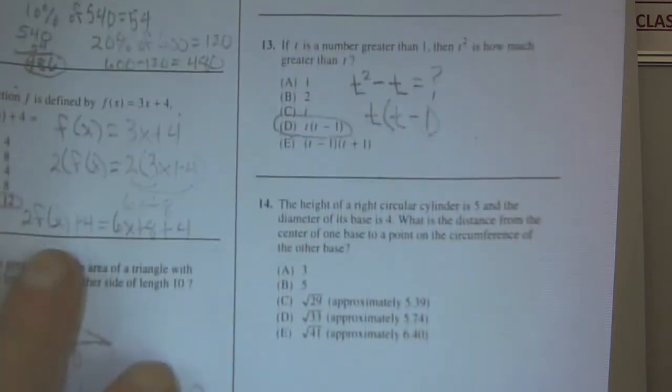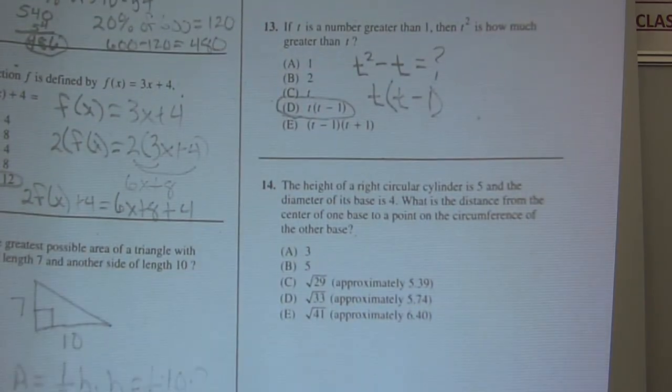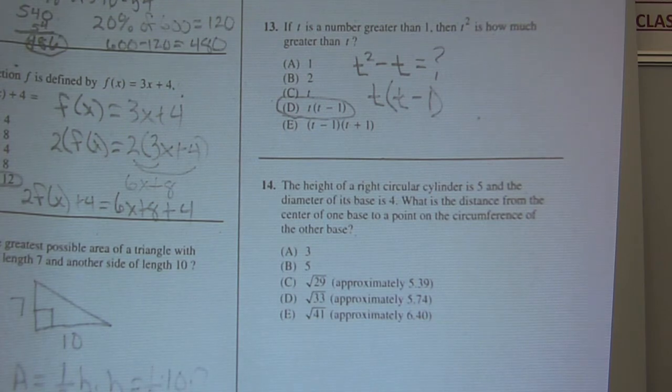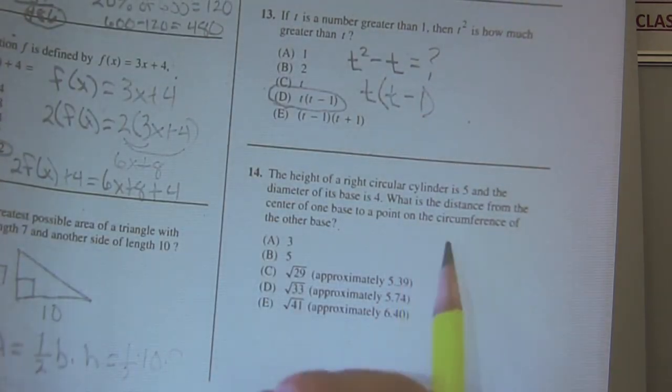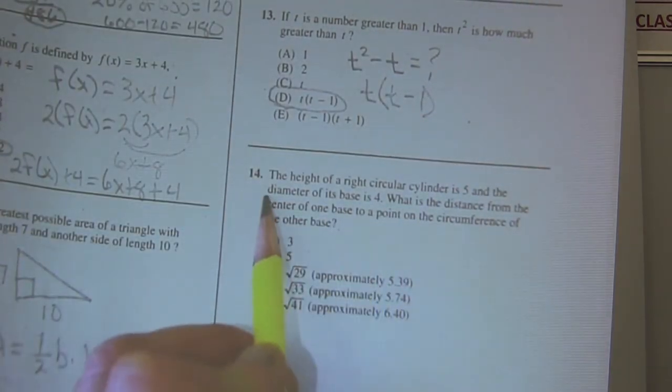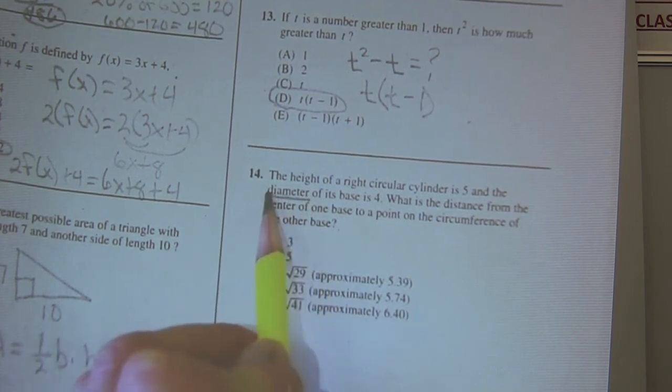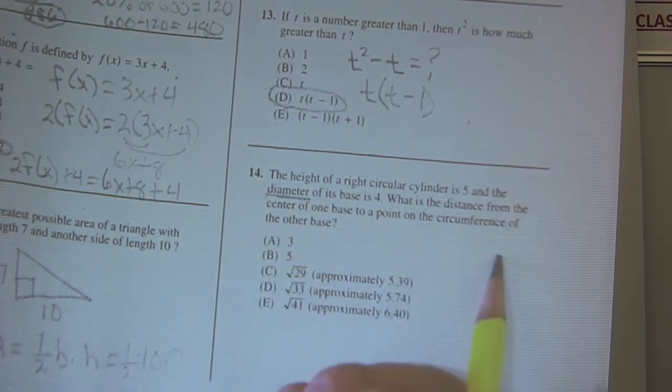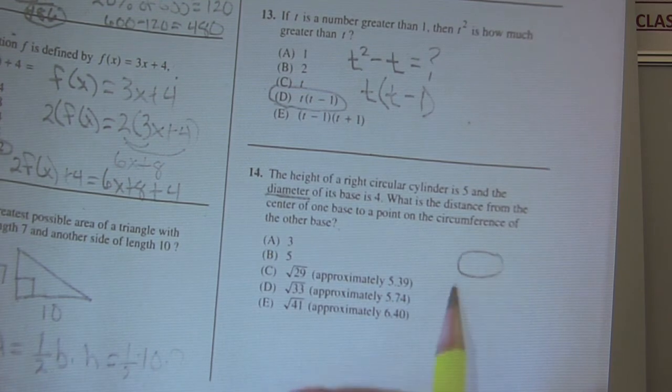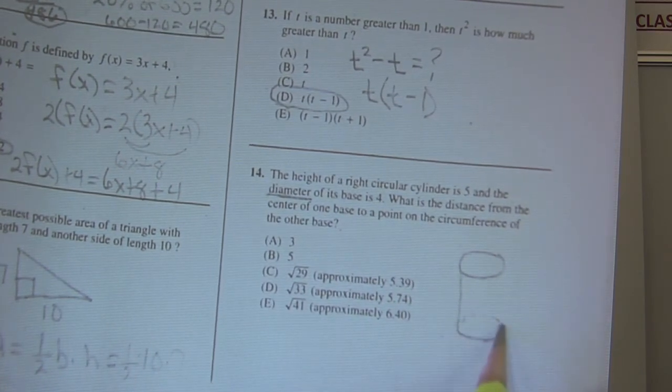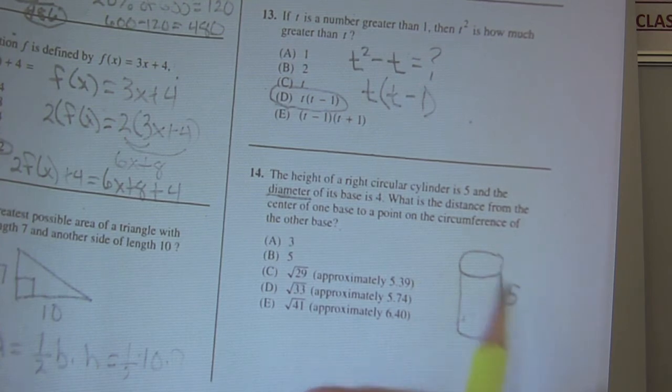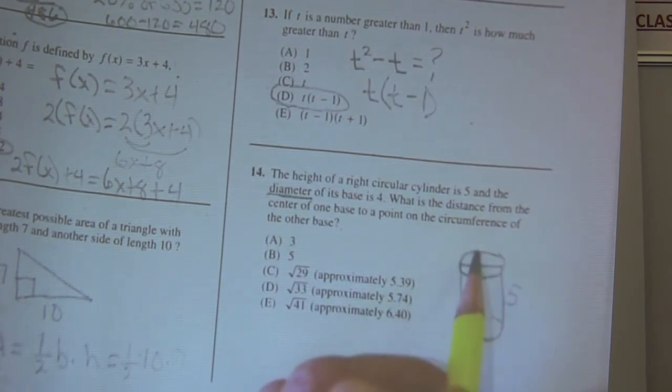Okay, number 14. Now they're getting progressively harder. Remember, they start off easy and they should start getting progressively harder. The height of a right circular cylinder is 5, and its diameter, okay, key thing right there, its diameter of its base is 4. Okay, let's draw a right circular cylinder.